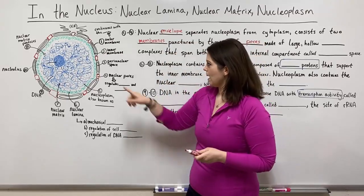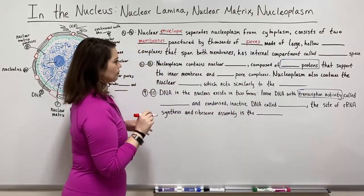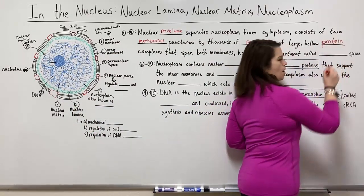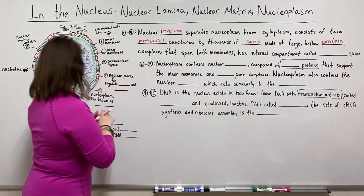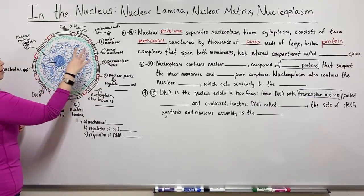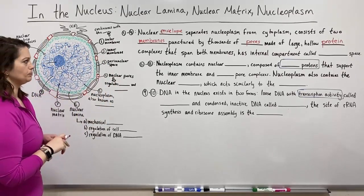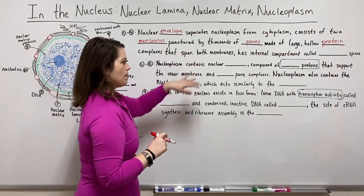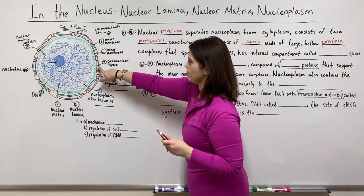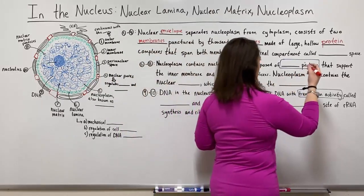Thousands of these pores are drawn around this big spherical nucleus. These pores are made of large, hollow protein complexes. They're hollow, which allows things to move from the cytoplasm into the nucleus and from inside the nucleus back out into the cytoplasm. Those pores span both membranes and have a lot of regulatory function. In between the outer membrane and the inner membrane there is a small compartment called the perinuclear space.